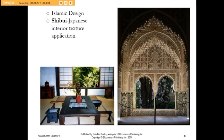We can look at cultural examples in Islamic design and Japanese design. As designers, we have to know what these cultural visual cues are and be sensitive to that when designing for people, either from that culture or when designing a restaurant with a cultural theme — we want to use these iconic images in a very thoughtful way.